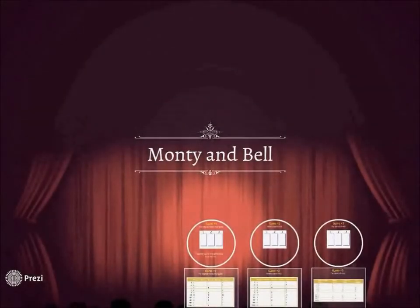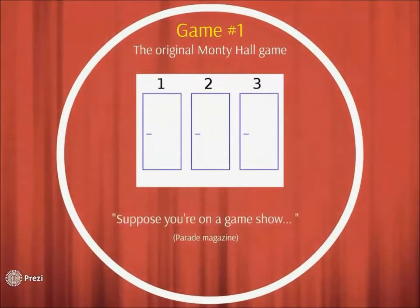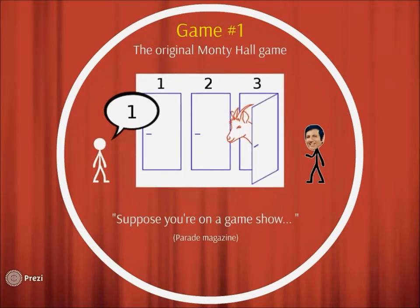Hey, Adam's Host Micro here. Suppose you are on a game show and you're given the choice of three doors. Behind one door is a car, behind the others goats. You pick a door, say number one, and the host, who knows what's behind the doors, opens another door, say number three, which has a goat. He then says to you, do you want to pick door number two? Is it to your advantage to switch your choice?